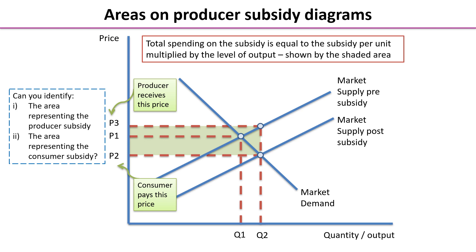I would like you to try and see if you can identify the area representing the producer subsidy — i.e. the amount of money that the government gives to the producer — and the area representing the consumer subsidy. So pause the video, have a little think, and rejoin me in due course.